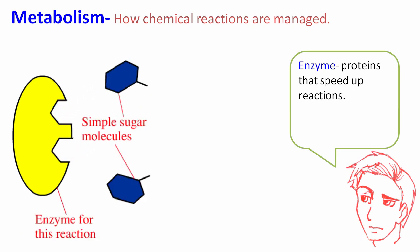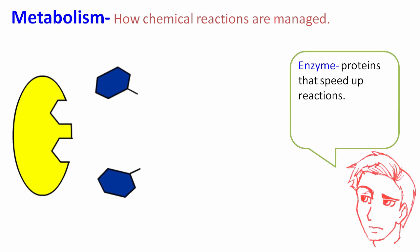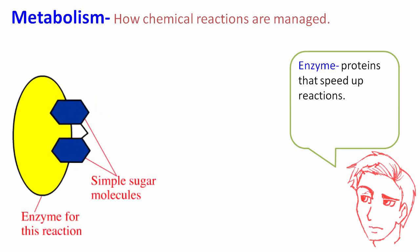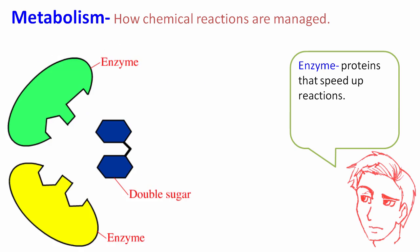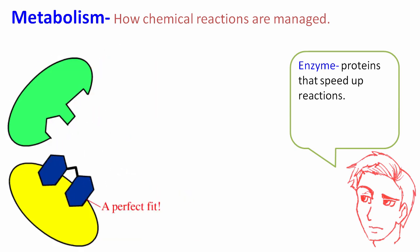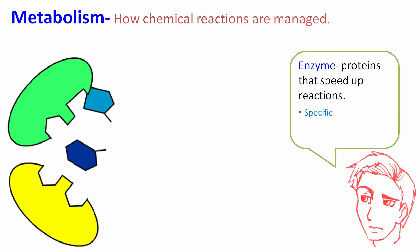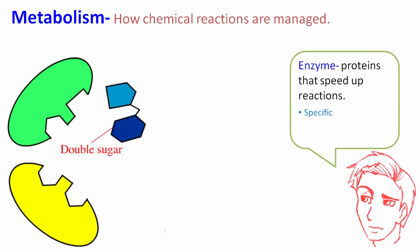The enzyme has a specific shape called an active site. That active site is what allows the substrate to fit in and provide the right angle for the chemical reaction. Enzymes are proteins that speed up chemical reactions. However, not all enzymes work with all substrates — you need the right shape, so enzymes are quite specific about the type of substrate they utilize.